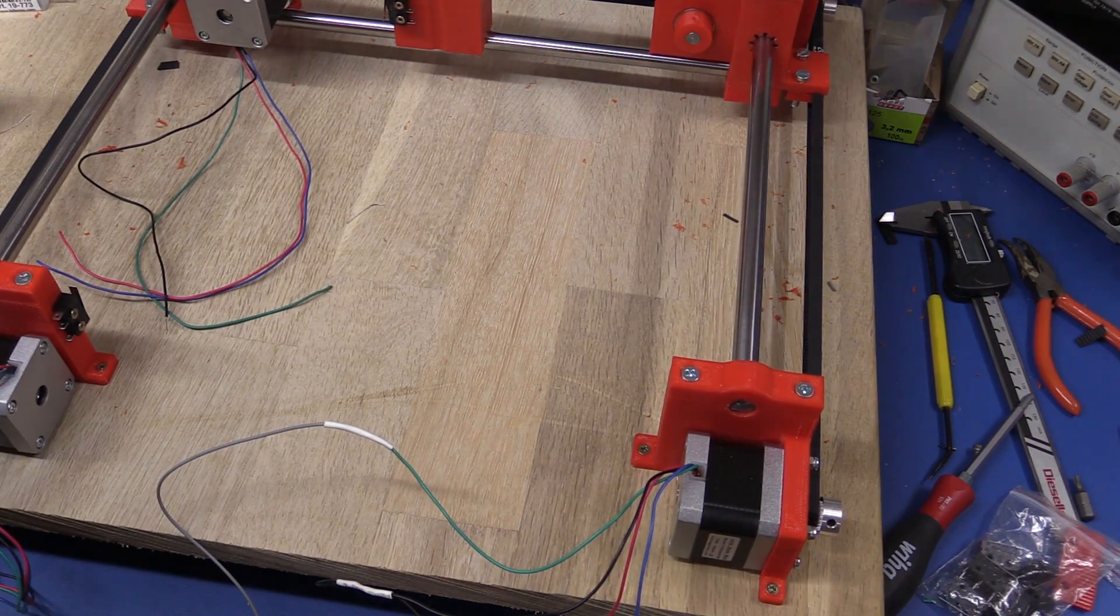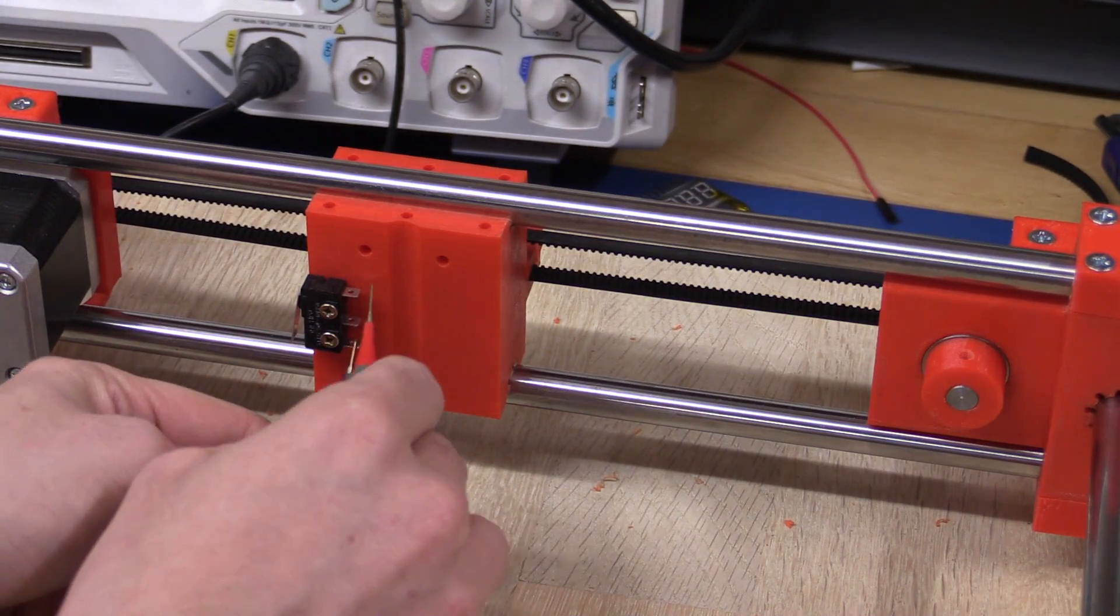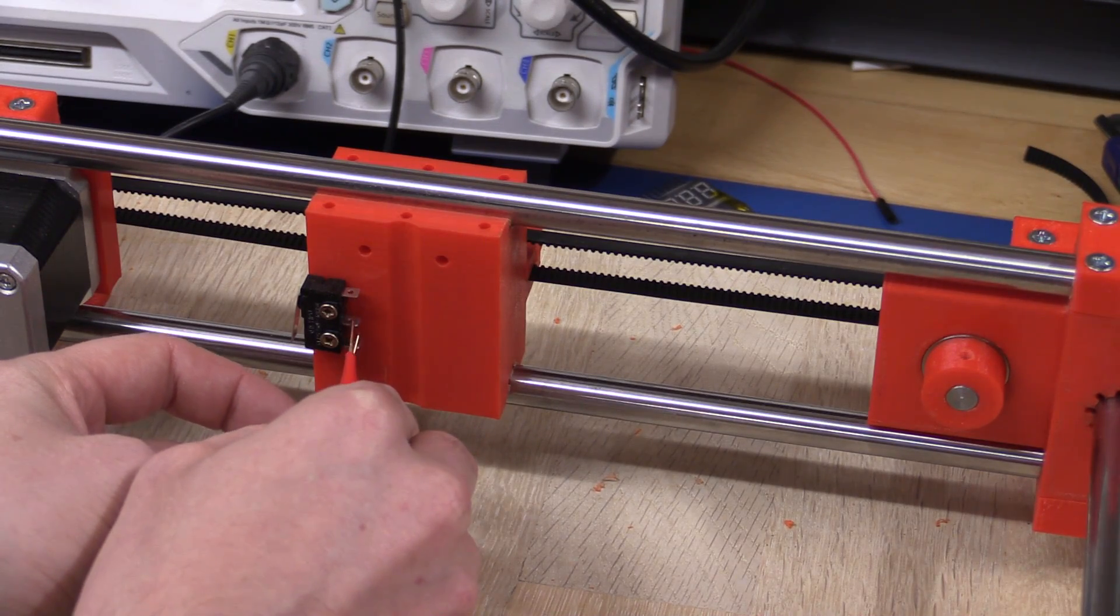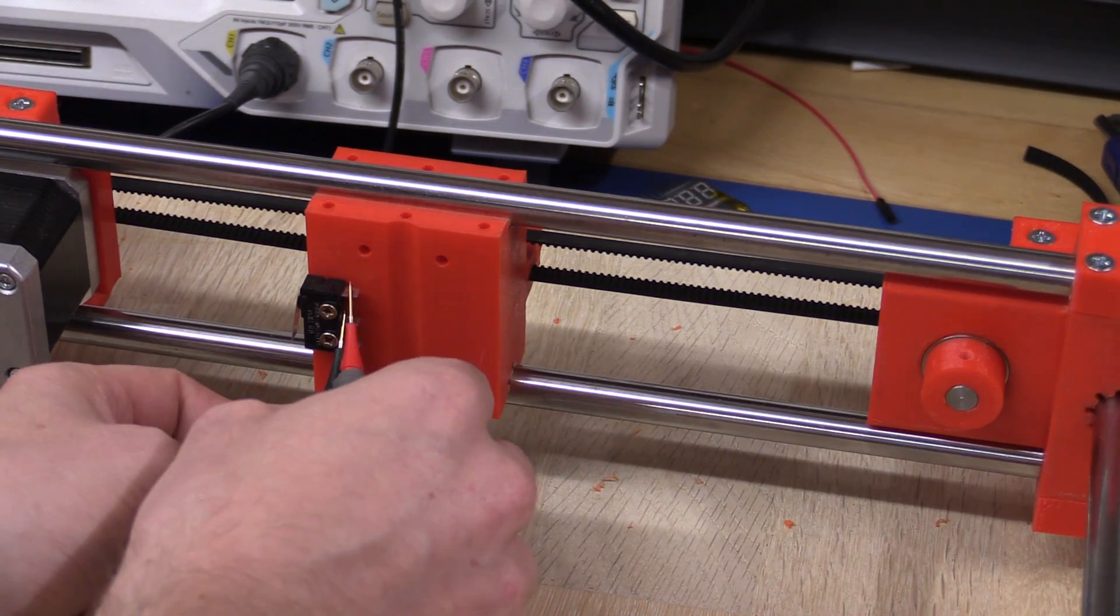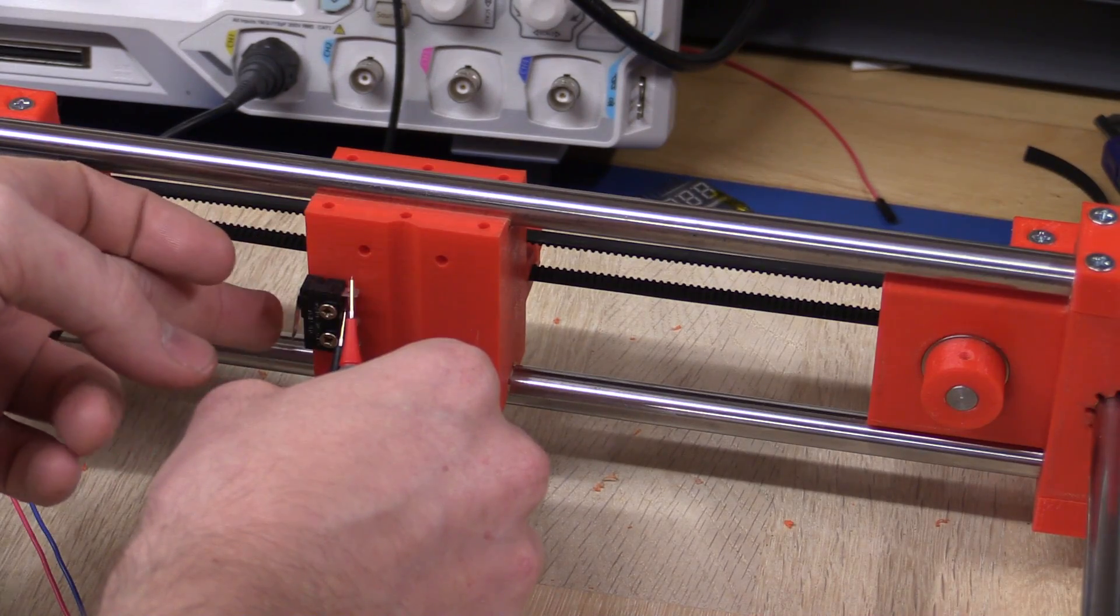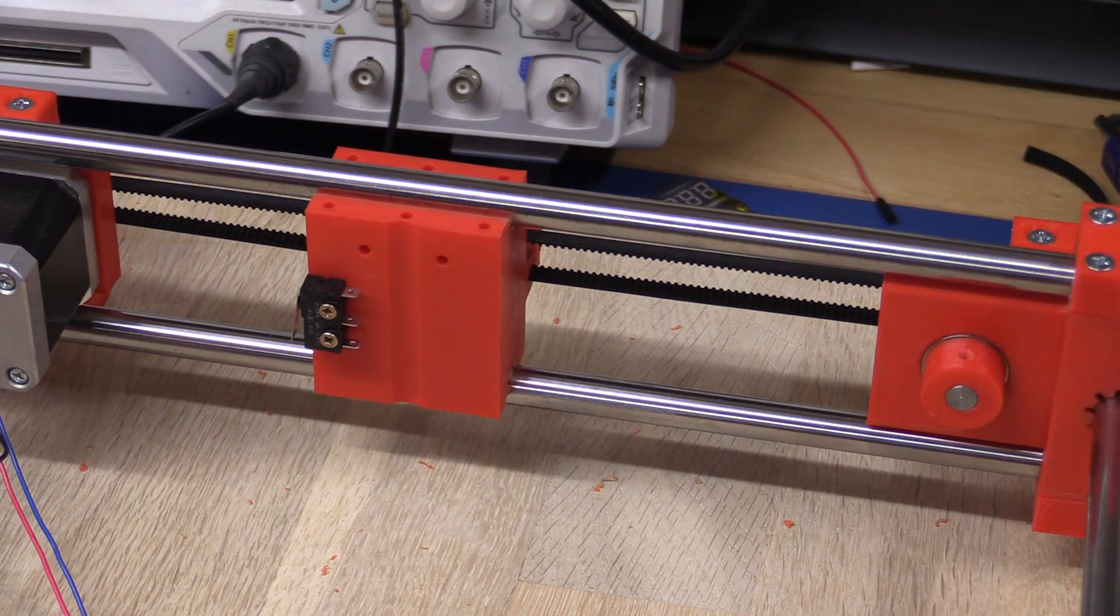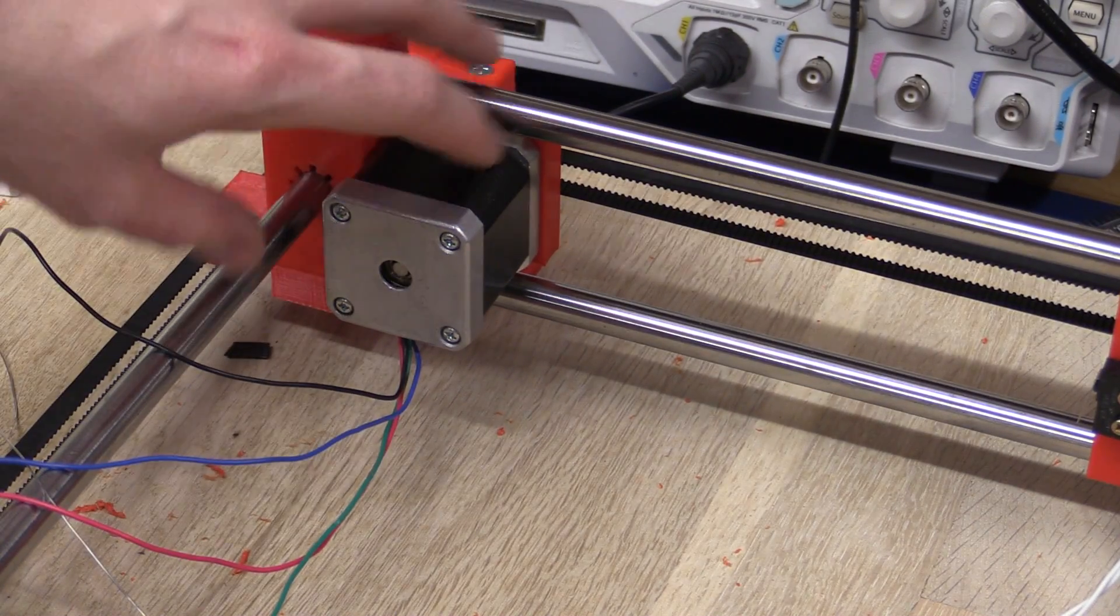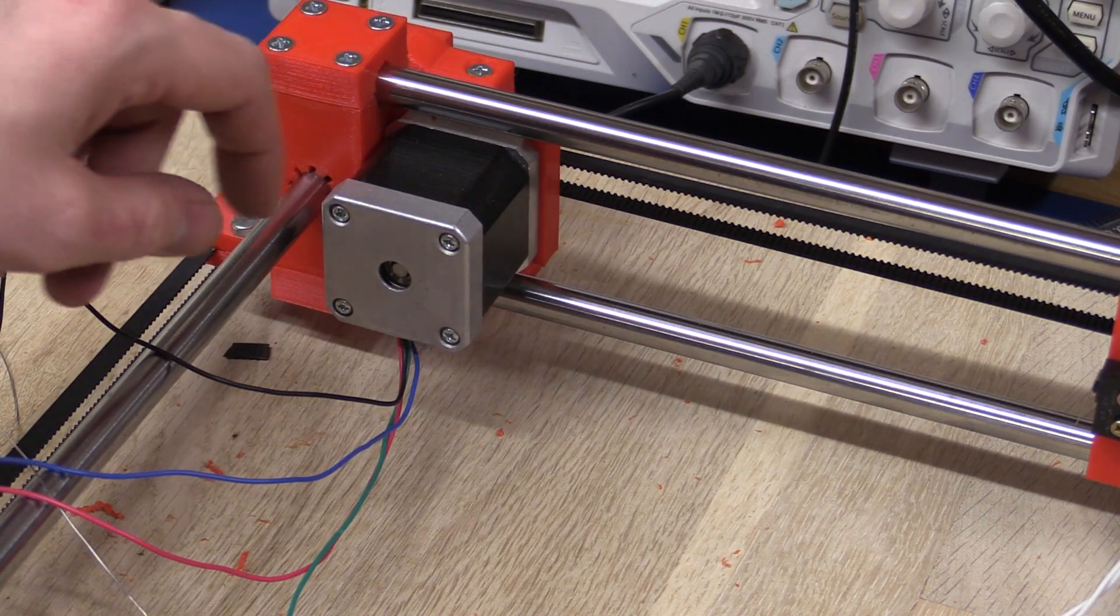And now I will have to connect up the end stops. So I will just go and see which are the normally open pins. So the top pin seems to be the common and then the middle one is the normally open. So I will go and solder wires to these and also to the other end stop. So I think I will just go and turn this motor around so the wires come out on the top side here.